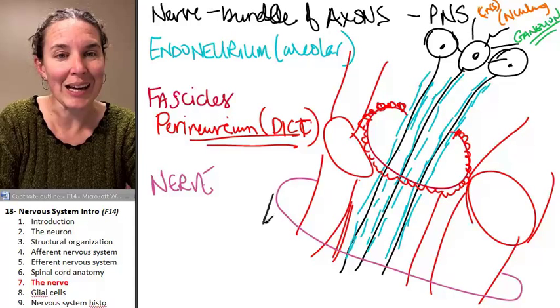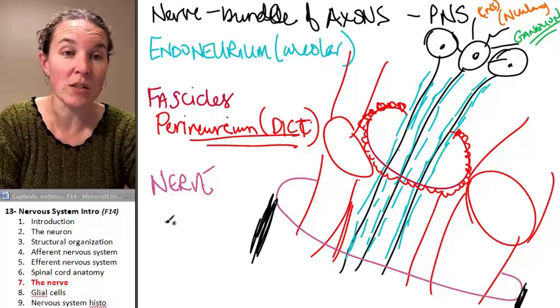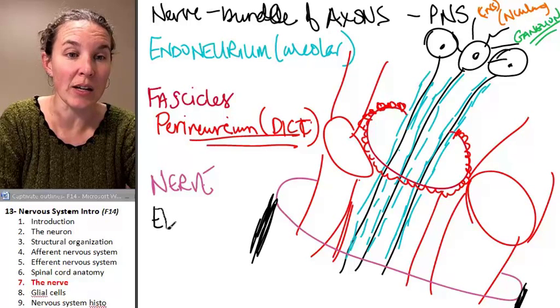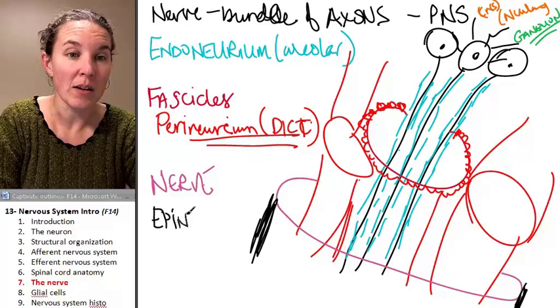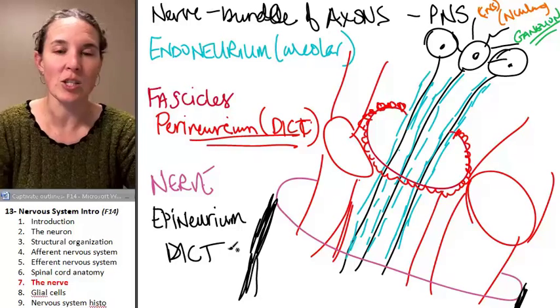We'll do this in black. The whole thing, the whole nerve is surrounded in epineurium. And the epineurium is made out of dense, irregular connective tissue. Boom.